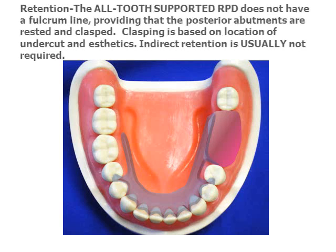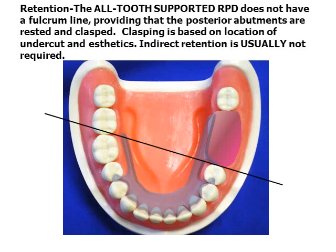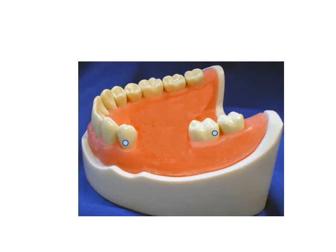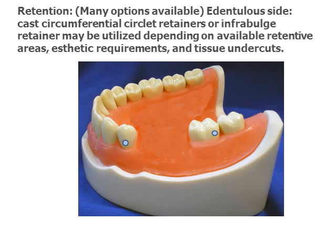The all tooth-supported partial denture does not have a fulcrum line and does not require indirect retention, provided that the posterior abutments are clasped and have rests. Clasping is based on location of the undercut, convenience, aesthetics, or operator preference. Mechanical action of the clasp is of secondary importance, unlike in the tooth tissue-supported partial.